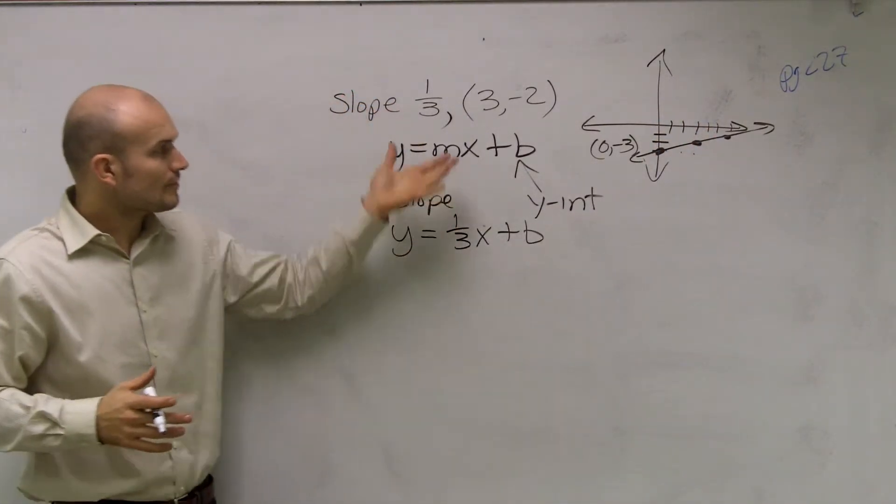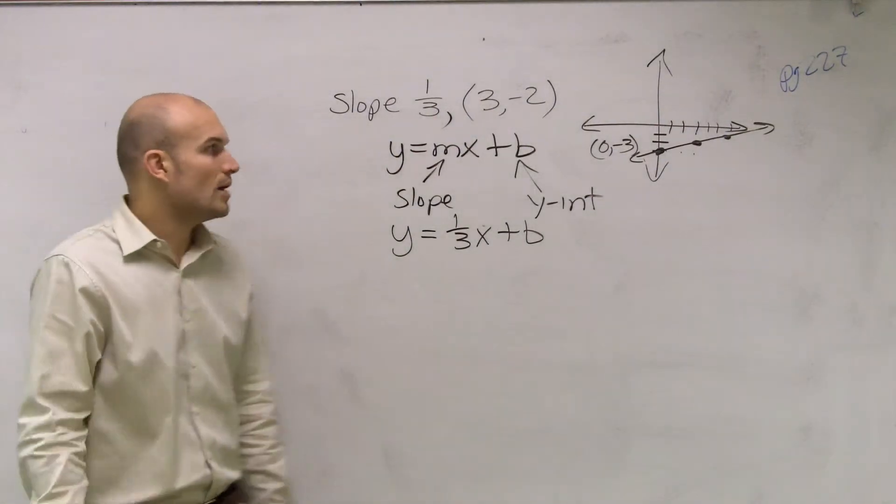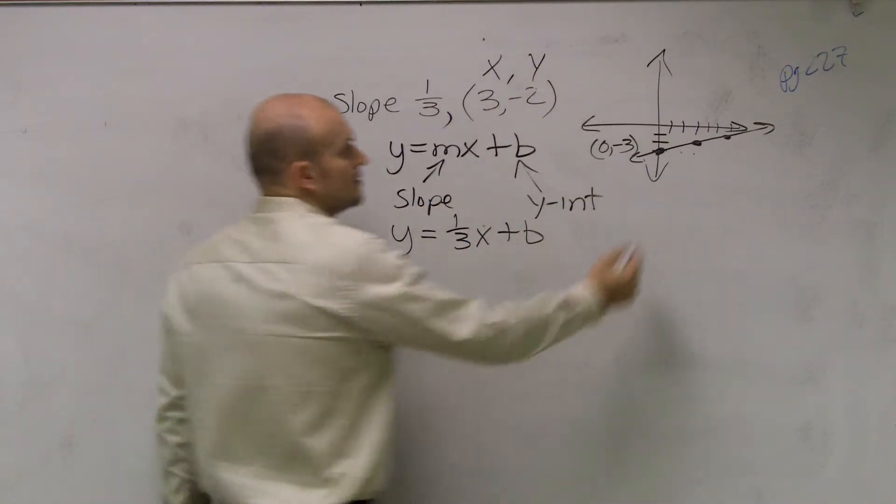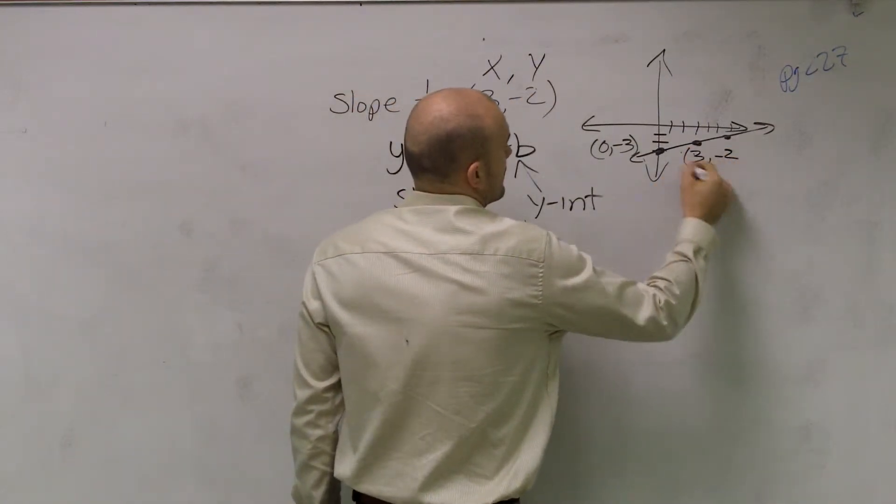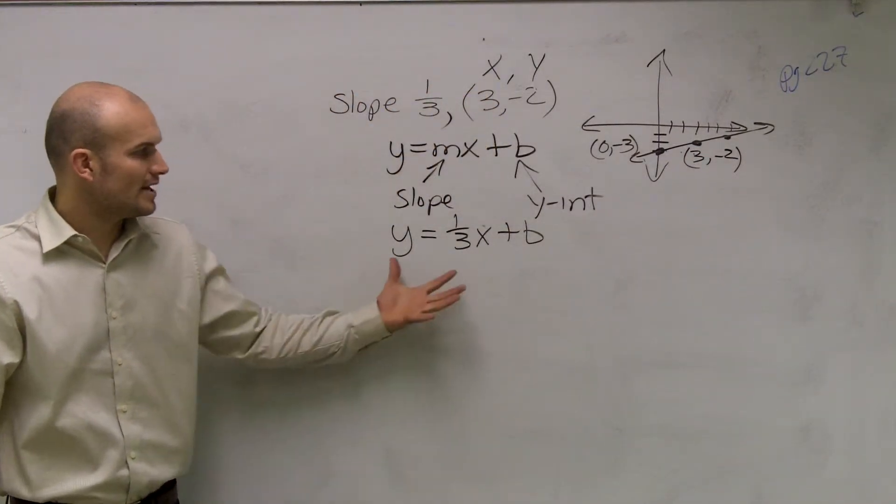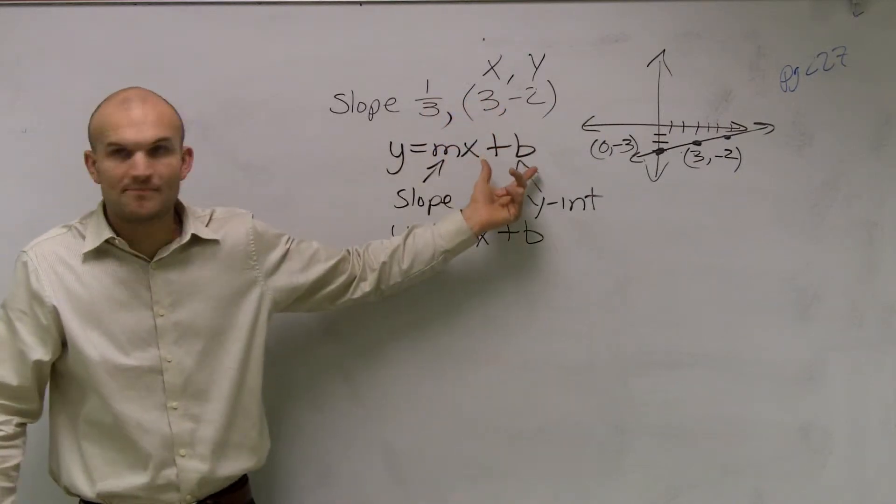But now, what happens if I'm just given a point? How can I do that without graphing? We know that a point has an x and a y coordinate. That point was (3,-2). So what I can do is, if I know what an x and a y are, but I don't know what my b is, I'm going to plug my x and y into my point.